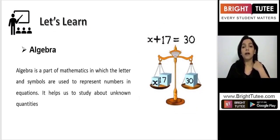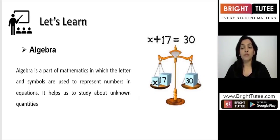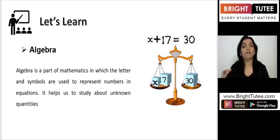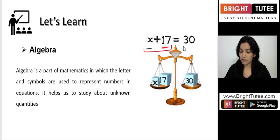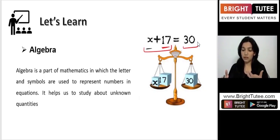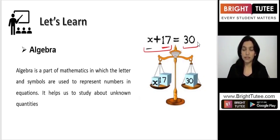Algebra is a part of mathematics in which letters and symbols are used to represent numbers in equations. In algebra you will always deal with equations that have letters, variables, symbols, and numbers. It helps you to study unknown quantities — that is the use of algebra. For example, here x is a variable and a fixed number 17 are equated: x plus 17 is equal to 30. We will learn about variables more in this lesson.